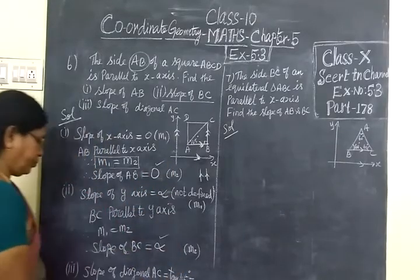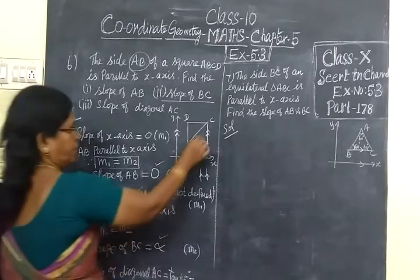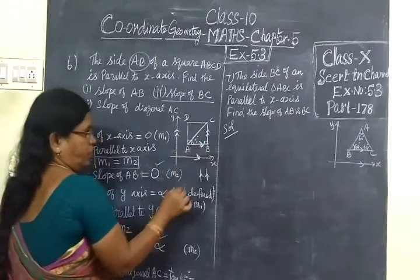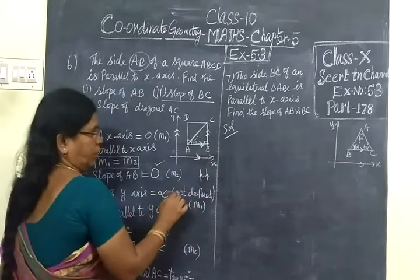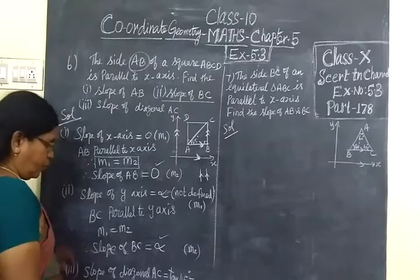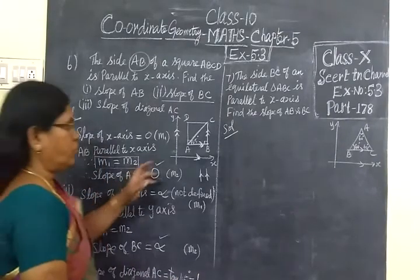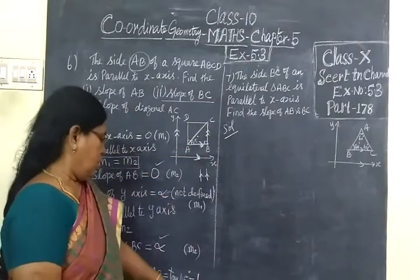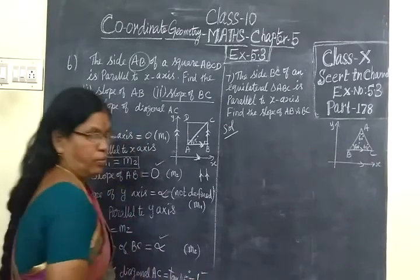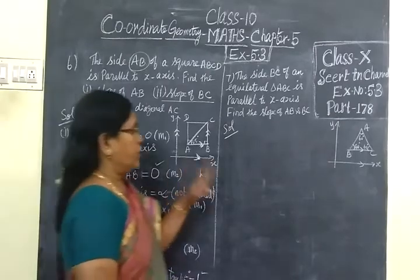And this is slope of diagonal AC. Diagonal is AC. If you know it is 90 degree, we know diagonal cuts equally. So AC cuts equally to 45 degree. So we know tan 45. Tan 45 equal to 1. So the slope of the diagonal AC is 1. Since tan 45 is 1, third answer over: 0, infinity, 1. Simple sum.